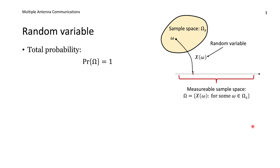Let us start by talking about random variables. Suppose the world around us is random in some way — then a random variable is a measurement of that randomness. There is a sample space, called omega, of all the random states around us. When we are measuring something like rolling a die, a random variable is what we are measuring. One realization omega from the sample space gives us a value of our measurable random variable, and different realizations will have different probability of showing up.